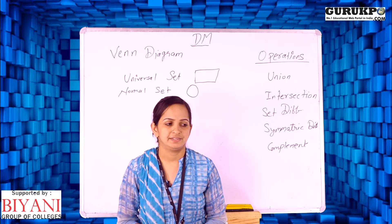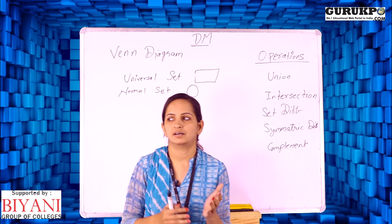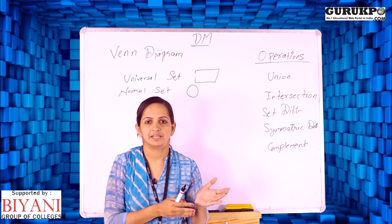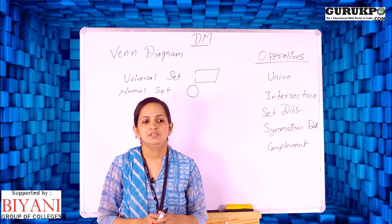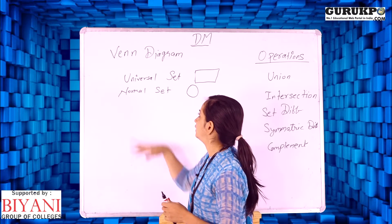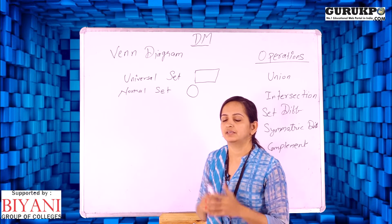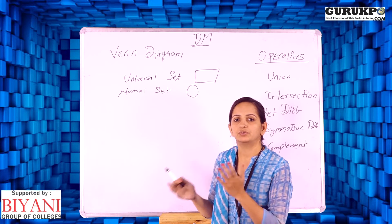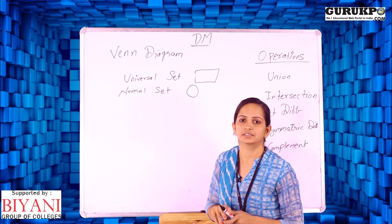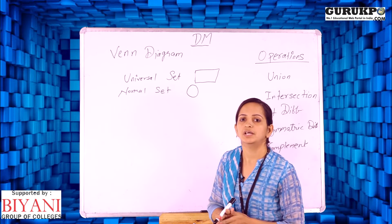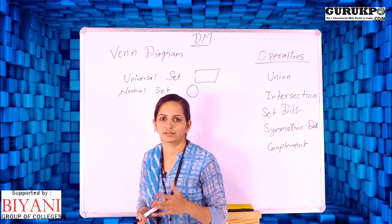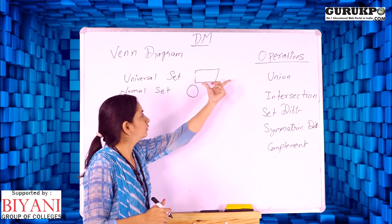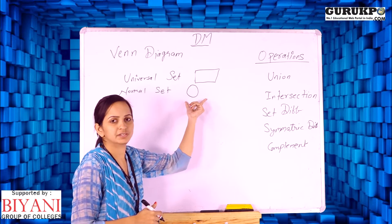What actually the Venn diagram is? A Venn diagram is nothing but the graphical representation of a set. We can represent a set in a graphical manner — that is called a Venn diagram. To represent graphically: if we want to represent a universal set, we use a rectangle, and if we want to represent a normal set, we use a circle. Only these two symbols are used in Venn diagrams.